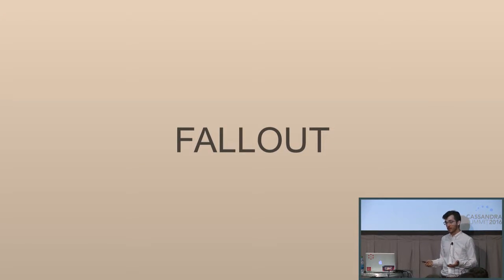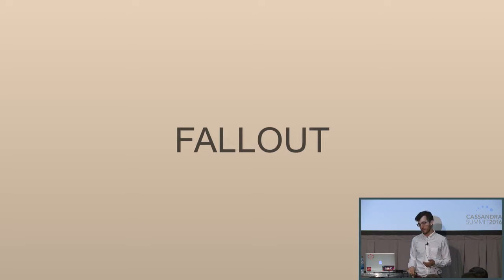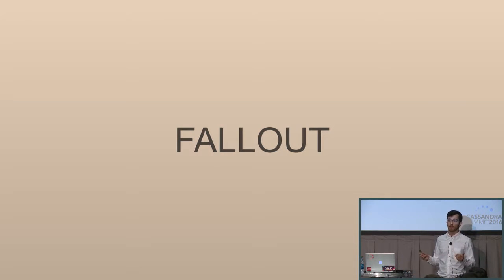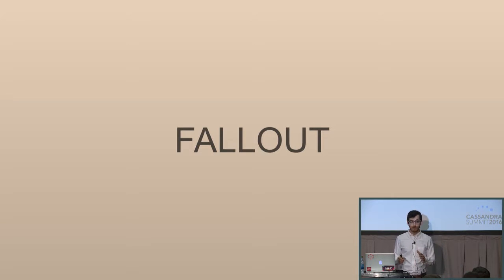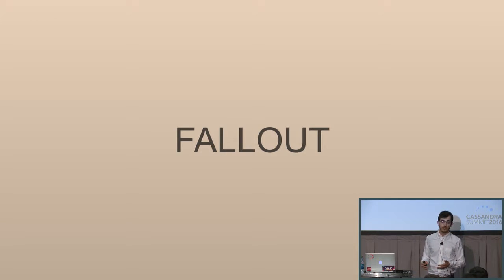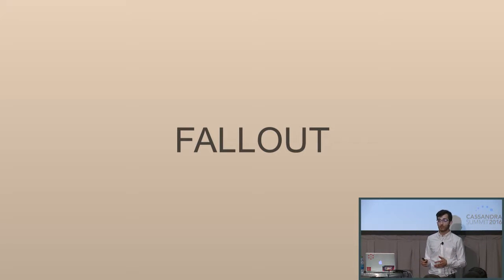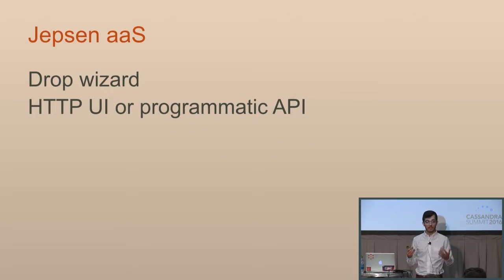I'm also here to talk about Fallout. Sticking with the music pun — Jepsen is named after Carly Rae Jepsen, and Fallout is named after Fall Out Boy. Jepsen is very useful for testing distributed systems generally, but we wanted to focus on Cassandra in particular. Clojure is a fantastic functional language, but not something many of our developers have experience with. So we built a Jepsen as a service — this is Fallout.